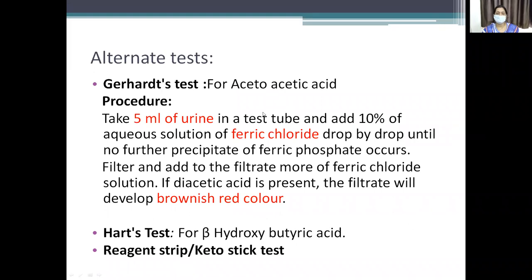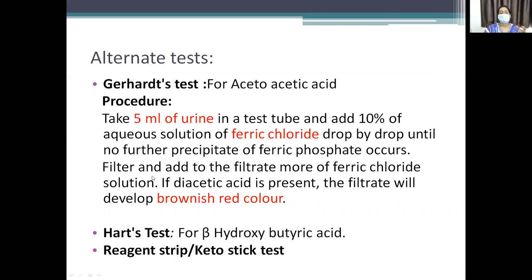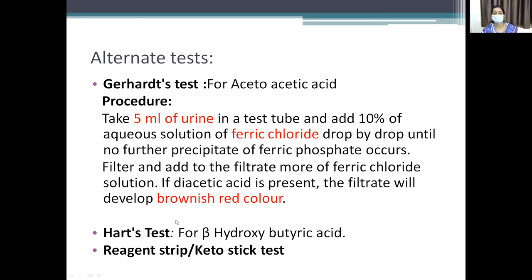Alternate tests: for diacetic acid, you use Gerhard's test — take 5 ml urine, add ferric chloride drop by drop, filter it, and if diacetic acid is present, the filtrate develops a brownish-red color. Rothera's test covers ketone bodies; Gerhard's test is for diacetic acid specifically. The test not usually done is for beta-hydroxybutyric acid — that is Hart's test. Reagent strip tests are also commonly used for all chemicals present in urine.